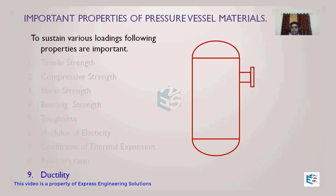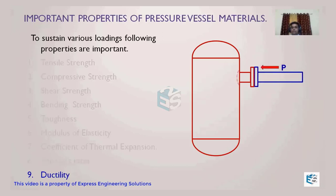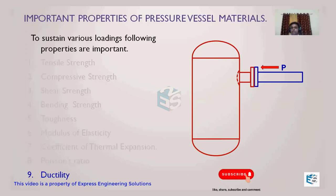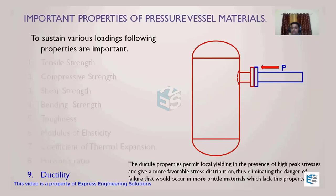The next property is ductility. Consider a vessel with piping attached — loads generated by the piping will be transferred to the vessel wall and nozzle. If loads are pushing the vessel, a deformation will occur at the junction of the nozzle wall and the shell. If instead of ductility the material is brittle, the vessel will automatically fail at that junction because of the applied loading.